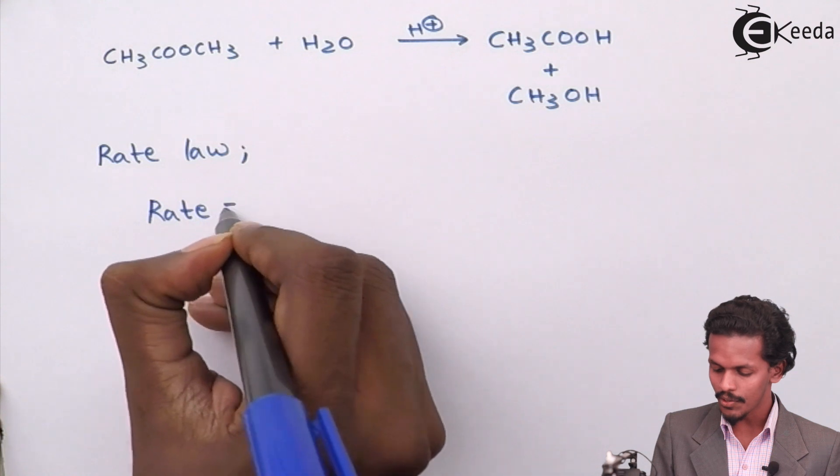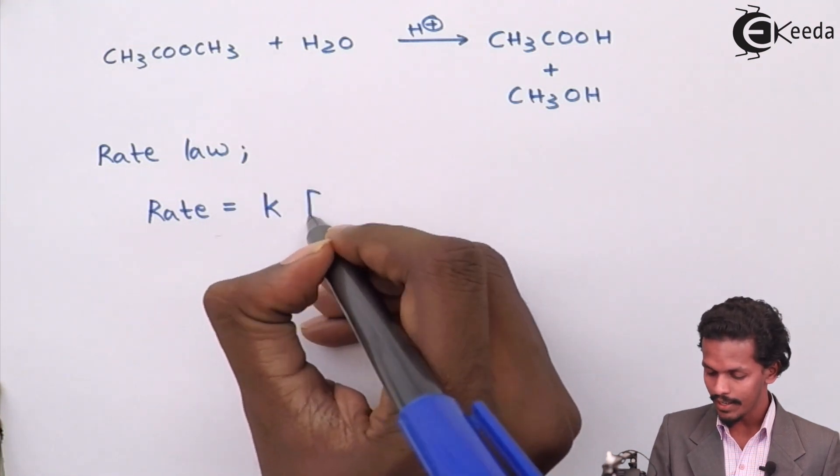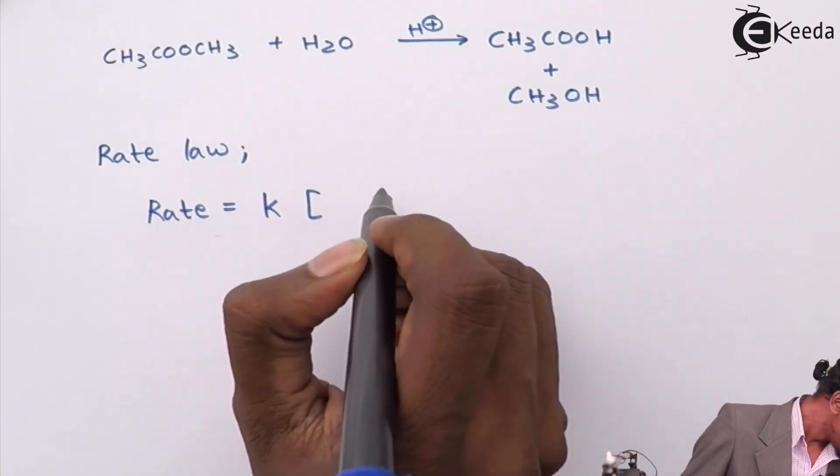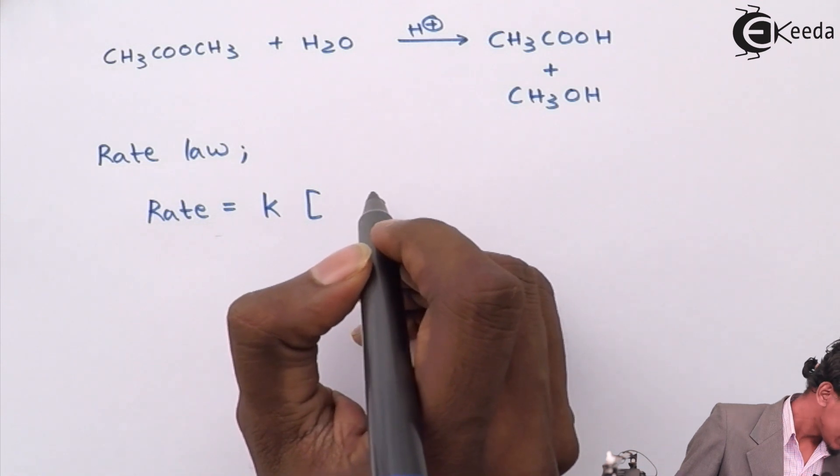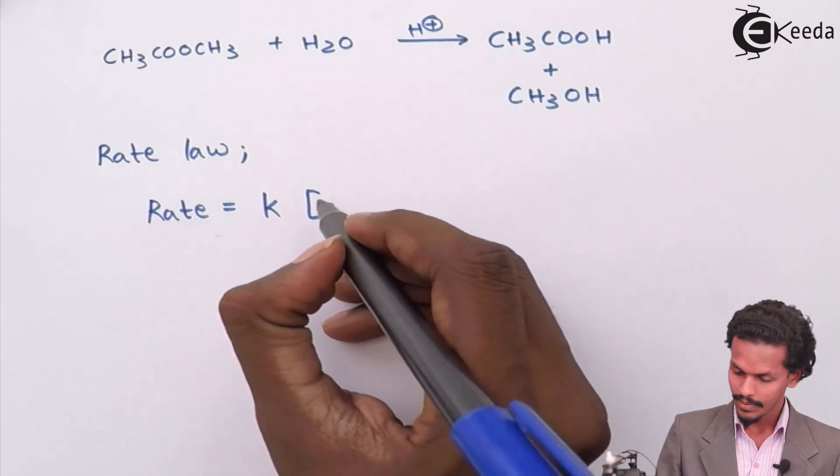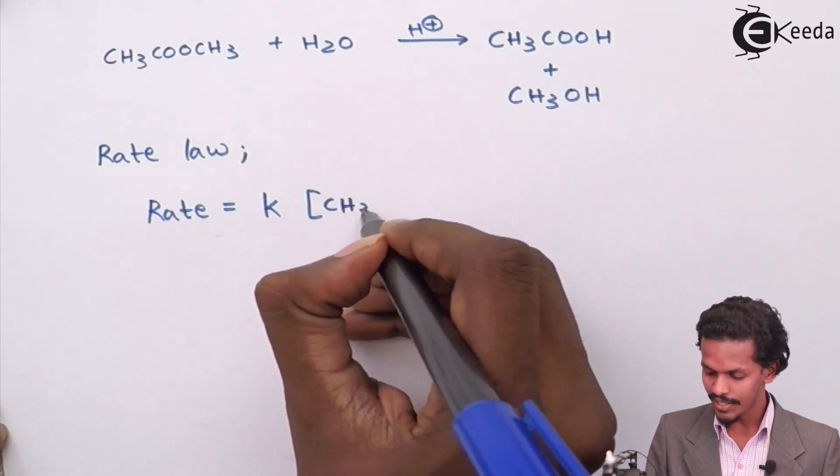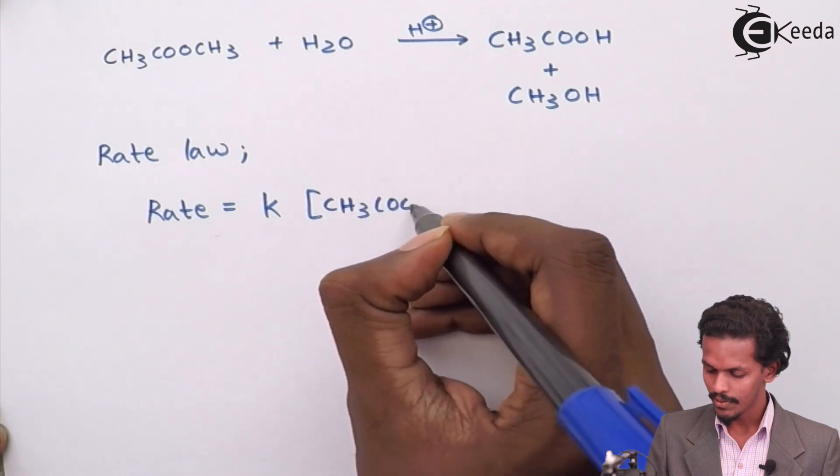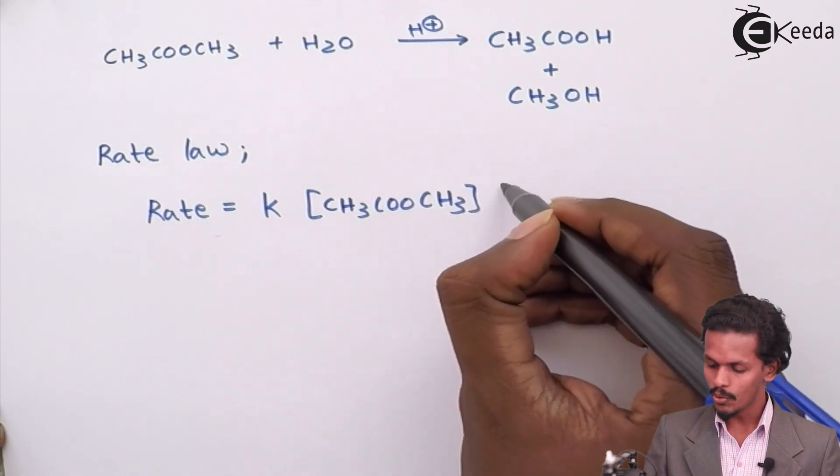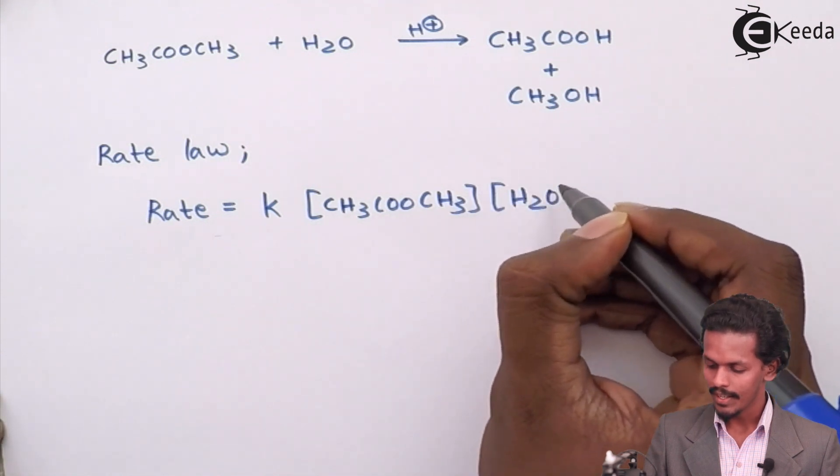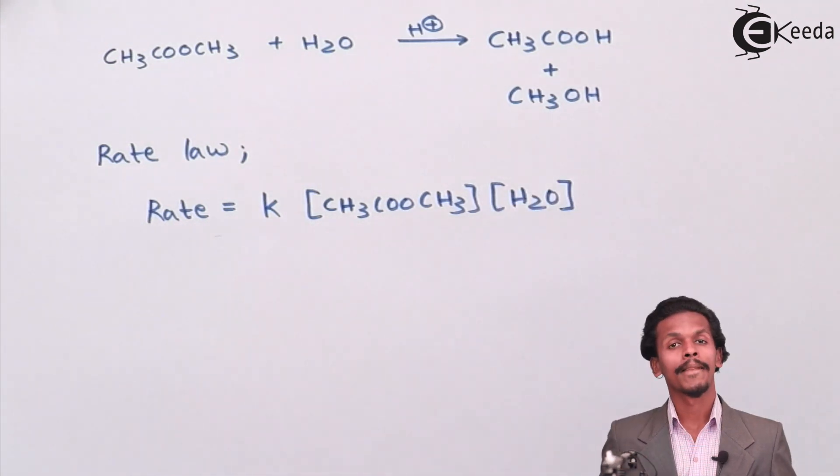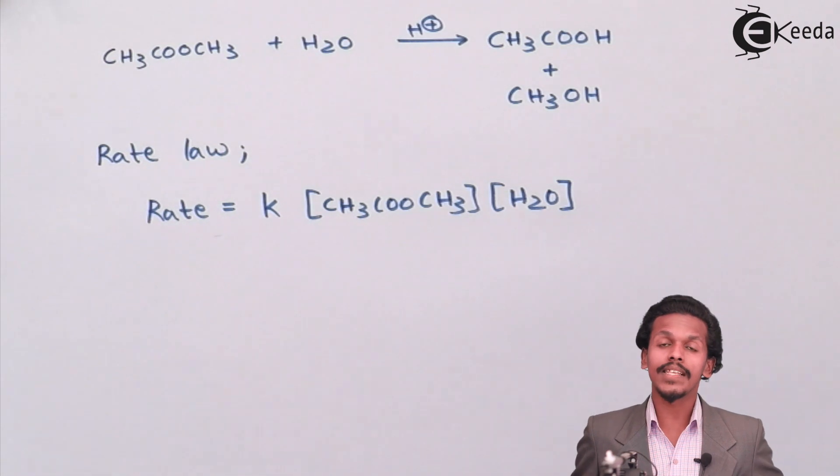After applying rate law, we could get the rate of reaction is equal to the rate constant k times CH3COOCH3 concentration times H2O concentration.